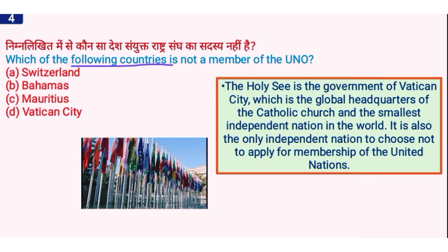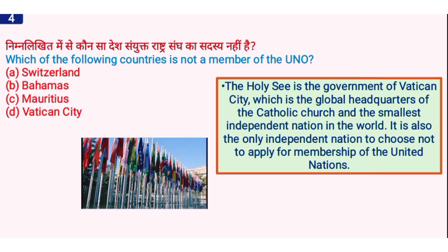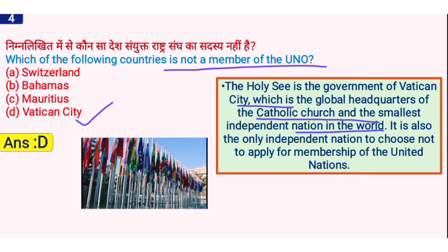Which European country is not a member of the United Nations Organization? The right answer is option D, Vatican City. Vatican City is not a member of the United Nations Organization. The Holy See is the government of Vatican City, which is the global headquarters of the Catholic Church and the smallest independent nation in the world. It is the only independent nation that chose not to apply for UN membership.